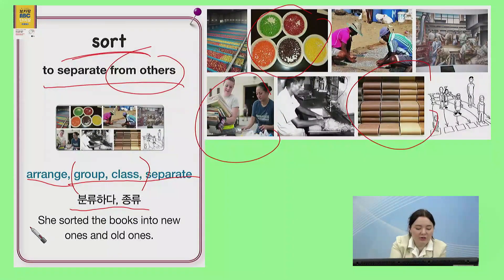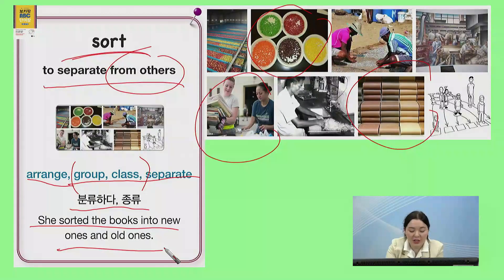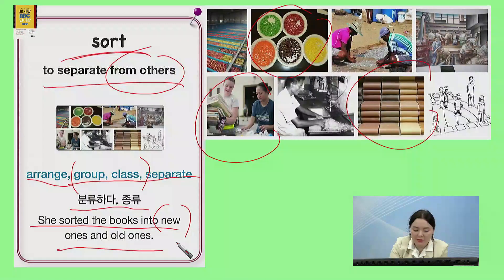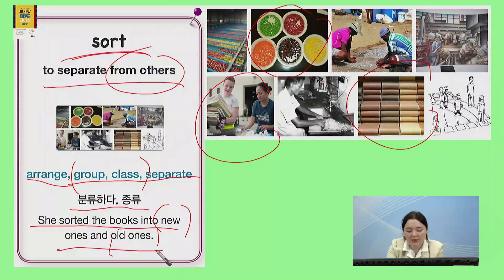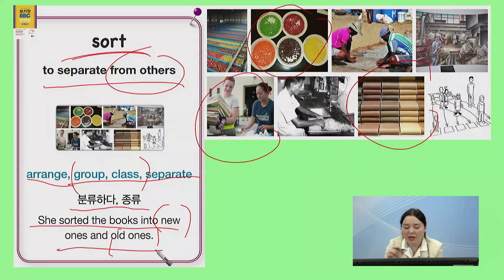So, you could say: she sorted the books into new ones and old ones. 그녀는 책을 오래된 책과 새 책으로 분류하였습니다. New ones — 새 책, and old ones — 오래된 책 — 분류했습니다.